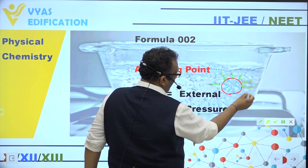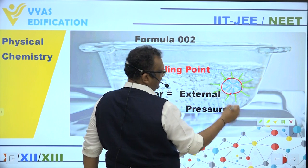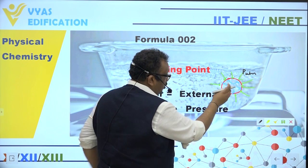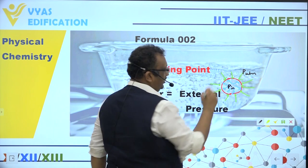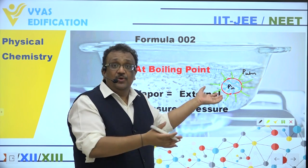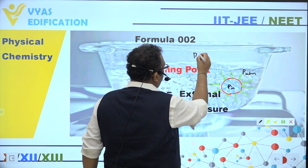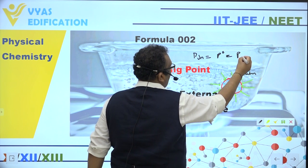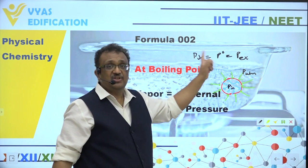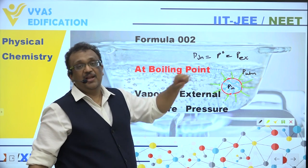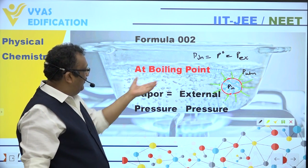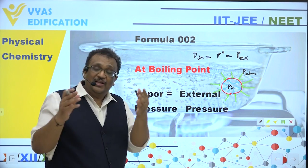Bahar se kya hai? Bahar jo pressure lag raha hai woh toh atmosphere hai — P_atmosphere jo bahar se usko andar pichkane ki koshish kar raha hai. Jo usko phailane ki koshish kar raha hai woh hai P_internal. P_internal vapor ka hai us vapor ka jo liquid se abhi-abhi prakat hui. Yeh equal to vapor pressure, which is equal to P_external. Jab vapor pressure, external pressure ke barabar hoga, tabhi bulbula zinda reh payega — tabhi ubal payega. Isliye hum kehte hain at boiling point, vapor pressure becomes equal to external pressure.